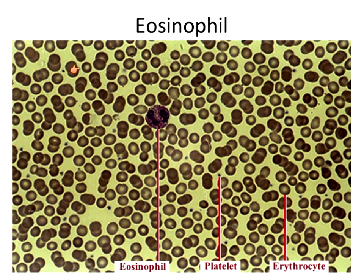There are five different types of white blood cells. Those five different types can be grouped into two different categories: granulocytes and agranulocytes.